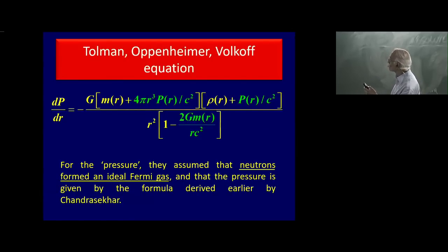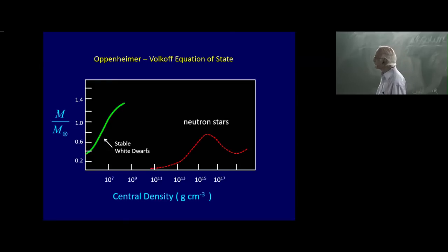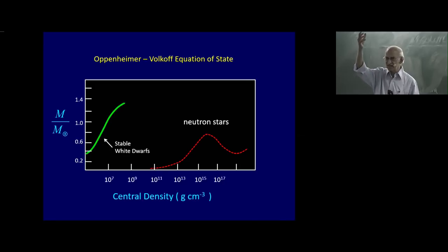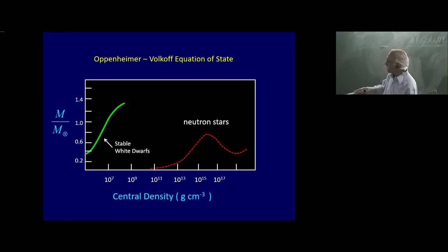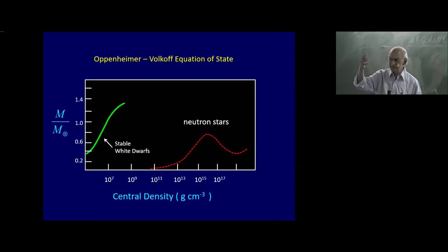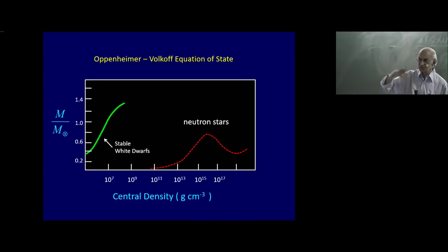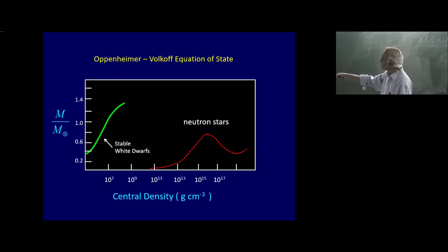This is the Oppenheimer–Volkov result. What is shown in the plot: the y-axis is the mass of various objects, and the x-axis is the central density. The green curve is the sequence of stable white dwarfs that Chandrasekhar had calculated. The white dwarf curve terminates at a mass of 1.4 solar masses at a density around 10 to the power 10 grams per cubic centimeter, which is where neutronization begins and electrons start to disappear. What Volkov calculated is the dashed red line.